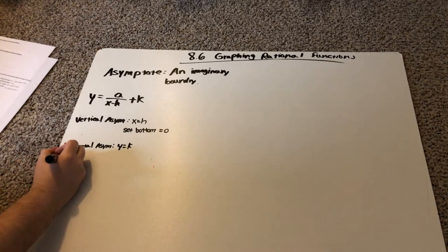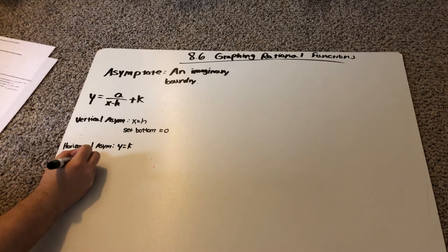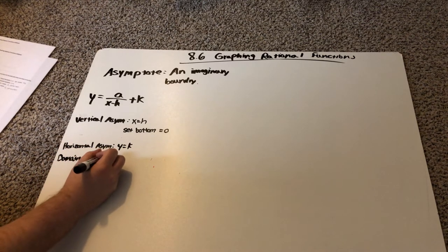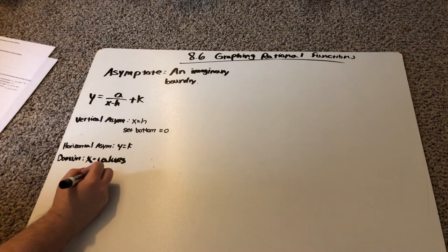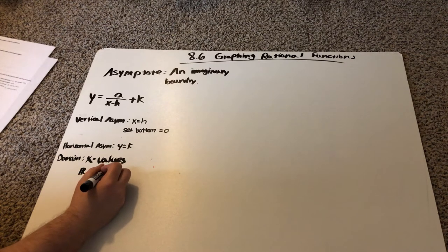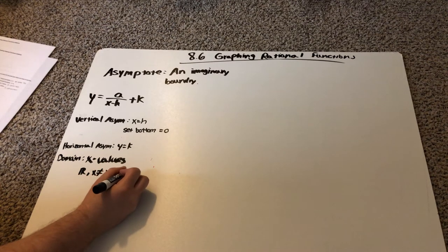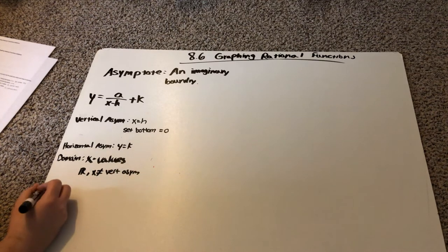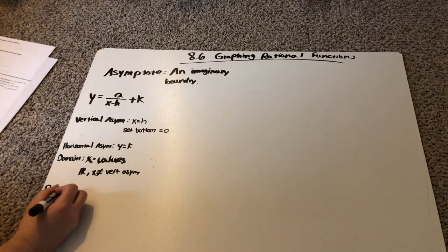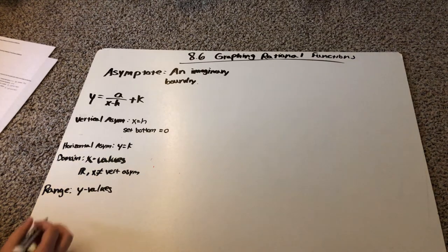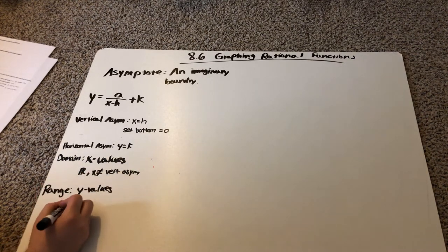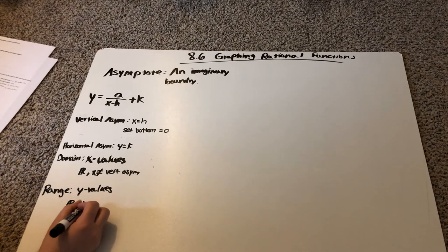The domain is all our x values, and we're going to say it's all real numbers except x cannot be equal to the vertical asymptote. And our range is all the y values. Just like the domain, we're going to say it's all real numbers except y cannot be the horizontal asymptote.